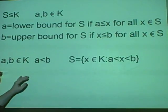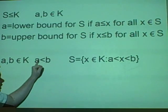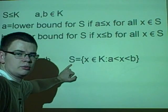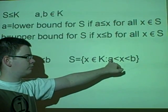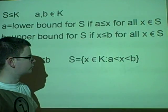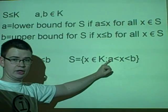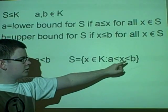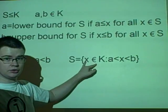Here we have a quick example. We have A and B as elements of K, and A is less than B. We have the set S which has elements such that they're bigger than A and less than B. This has a lower bound of A or anything less than A, and an upper bound of B or anything greater than B. So it is known to be bounded.